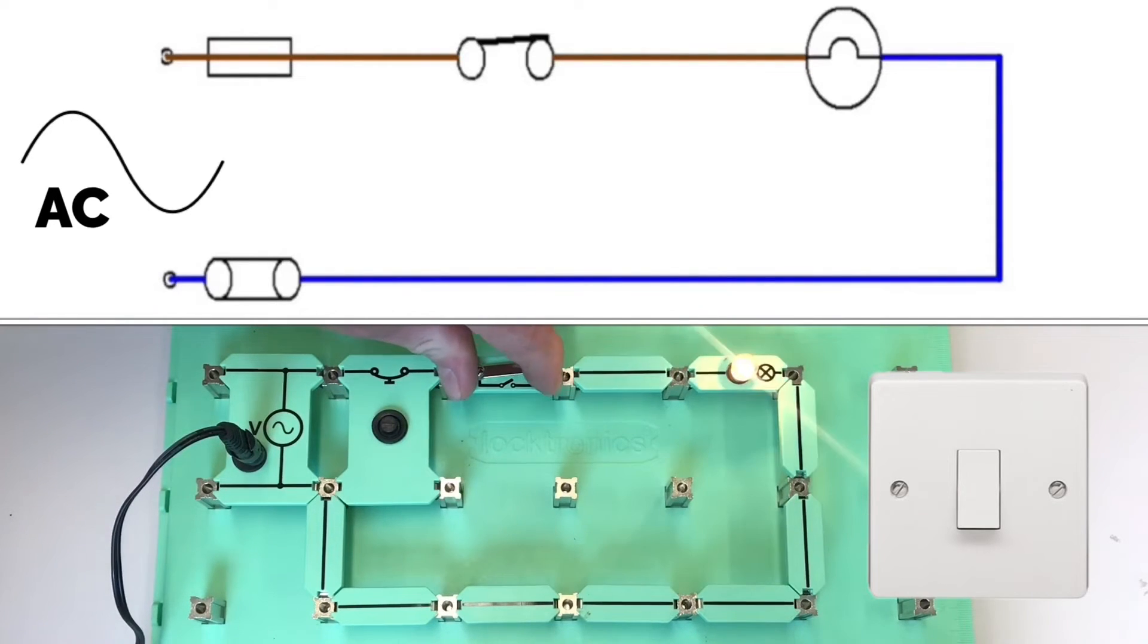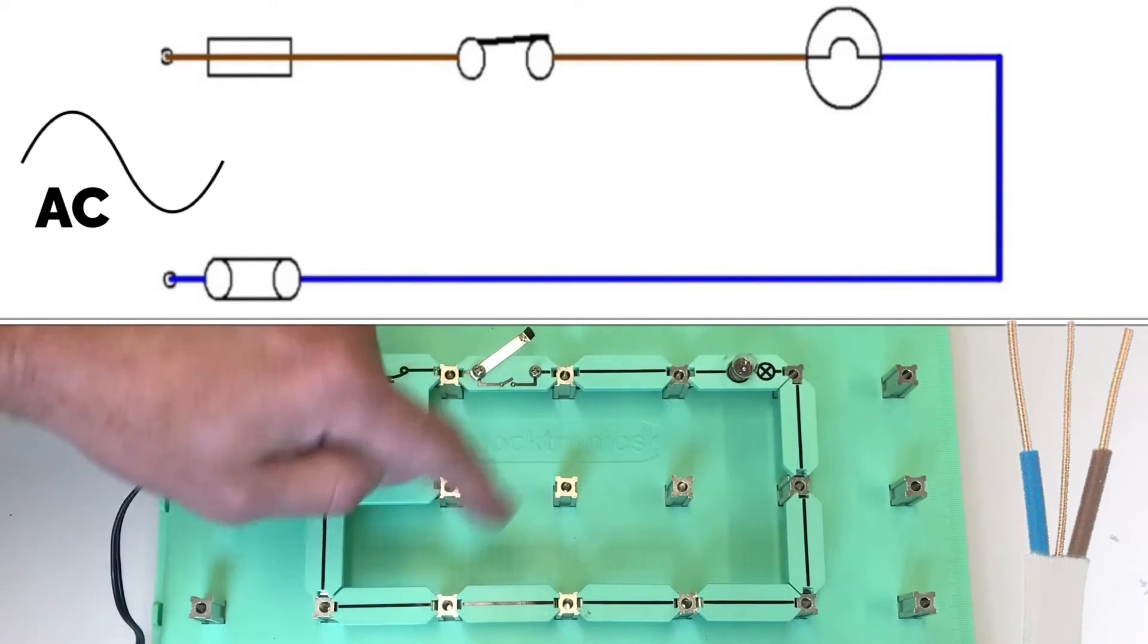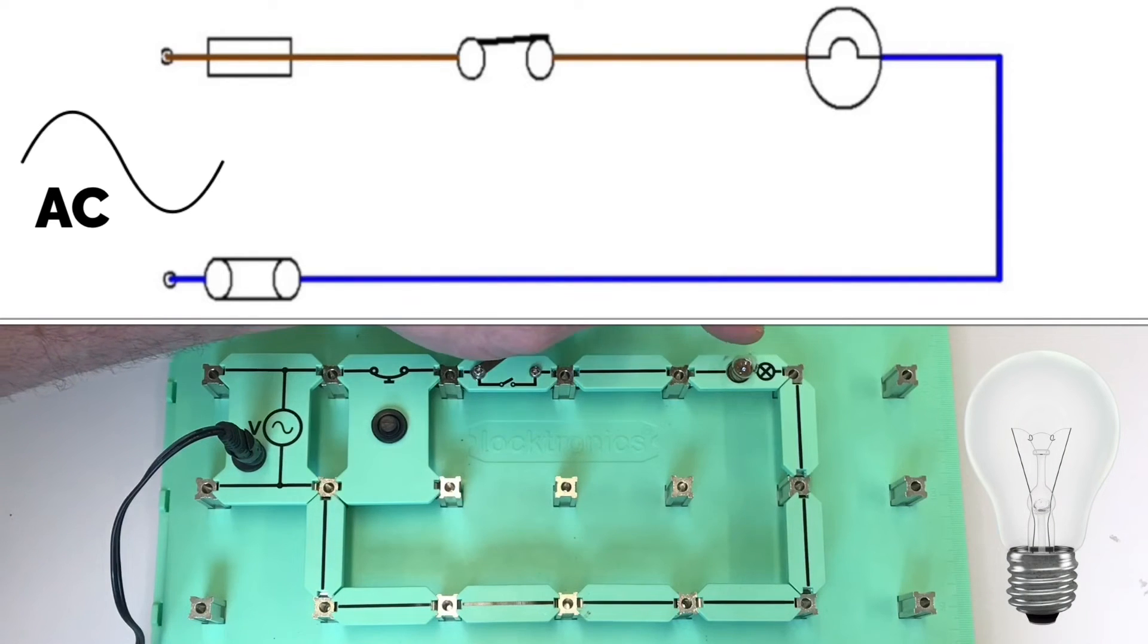When we operate the switch or open the circuit, the lamp will go off. The circuit is connected together using conductors, and we also need a load. And in this case, we've got a lamp.